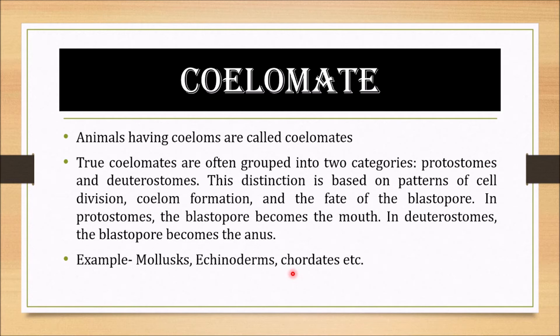Animals with a true coelom can be seen as triploblastic animals, meaning they have all three tissue layers: ectoderm, mesoderm, and endoderm.